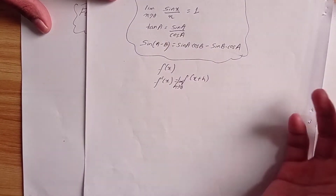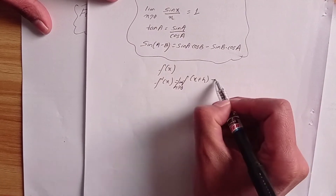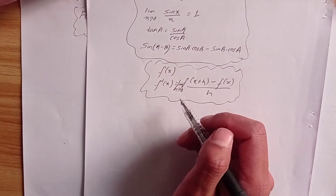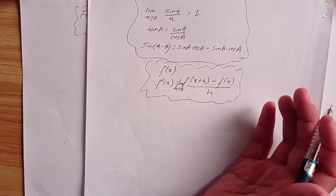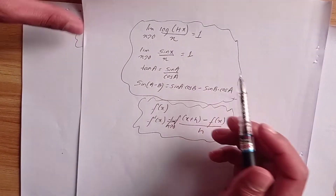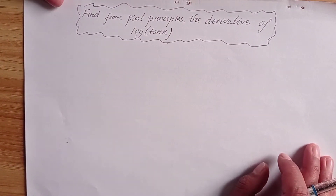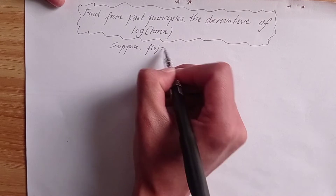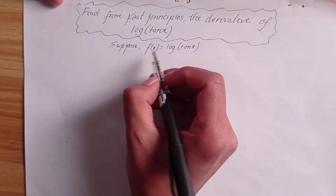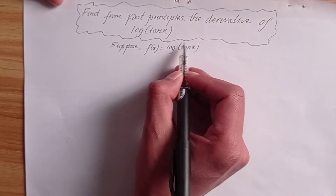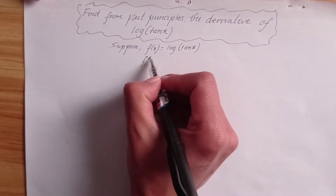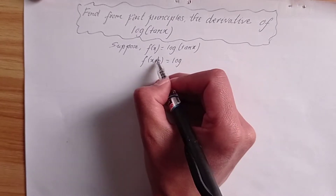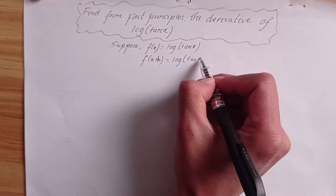So, according to first principles, the derivative is: limit h tends to 0, [f(x + h) minus f(x)] divided by h. Here, function of x is equal to log(tan x), so f(x + h) is equal to log(tan(x + h)).